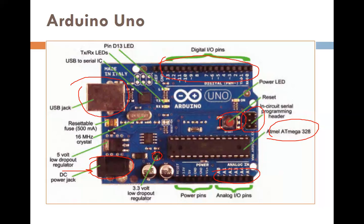In the digital pins, pin zero and pin one: one serial port is available on the Arduino board. Pin number zero and one also work as a serial port. You can also make other pins work as a serial port with the help of the software serial syntax, which we will discuss later during programming. There is an on-chip LED connected with pin number 13.